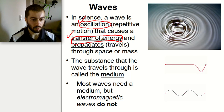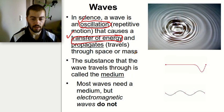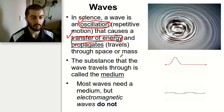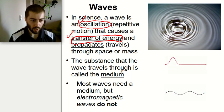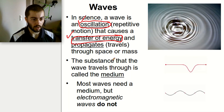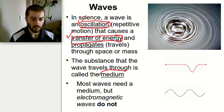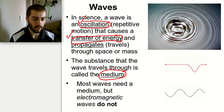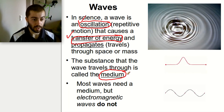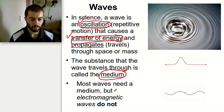Certain waves can move through empty space, and certain waves can't. A wave that is traveling through something — be it a mass of liquid, solid, or whatever it might be — the matter that the wave is traveling through is called the medium that the wave is propagating in. So the medium is the substance that the wave is traveling through. Most waves do need a medium to transfer through.